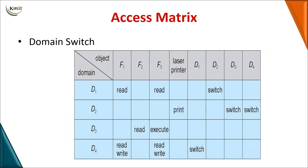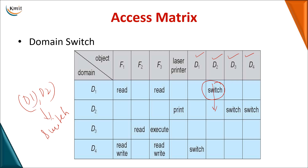The next concept is domain switch. In this matrix we are including D1, D2, D3, and D4 as domains. Domain switch means that a process which is executing in one domain can be switched to another domain. When you see the intersection D1 comma D2 and you have the word switch, it means that a process executing in D1 can be switched to domain D2.